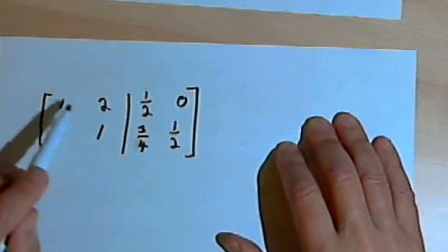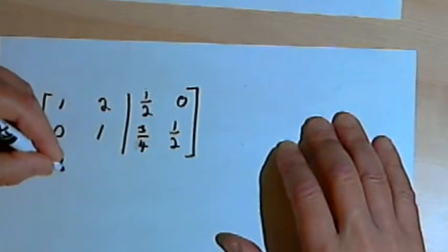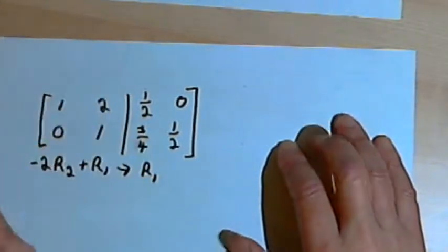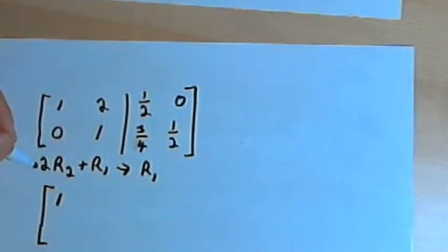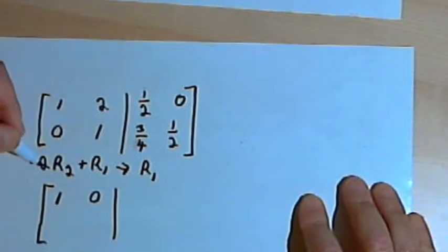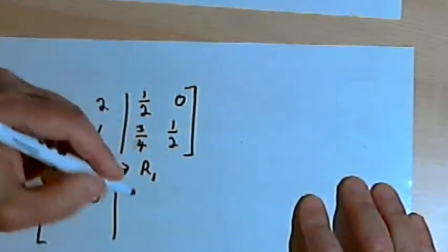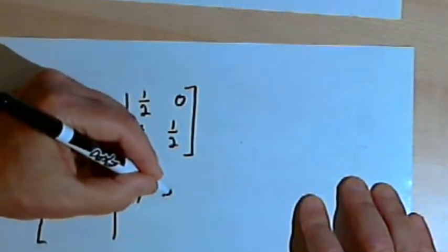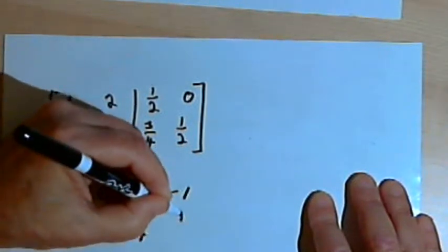The only thing left to do is to get rid of this 2 in the first row, second column. So I want to multiply the second row by negative 2 and add it to the first row — negative 2 times row 2 plus row 1 becomes the new row 1. So negative 2 times 0 is 0, add that to 1, I still have a 1. When I add negative 3/2 plus 1/2, I get negative 1. And negative 2 times 1/2 is negative 1; add that to 0 and I get another negative 1. The second row stays the same: 0, 1, 3/4, and 1/2.